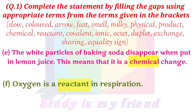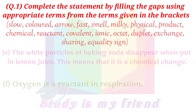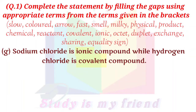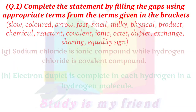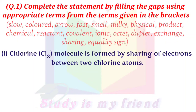F. Oxygen is a reactant in respiration. G. Sodium chloride is an ionic compound while hydrogen chloride is a covalent compound. H. Electron duplet is complete in each hydrogen in a hydrogen molecule. I. Chlorine (Cl₂) molecule is formed by sharing of electrons between two chlorine atoms.